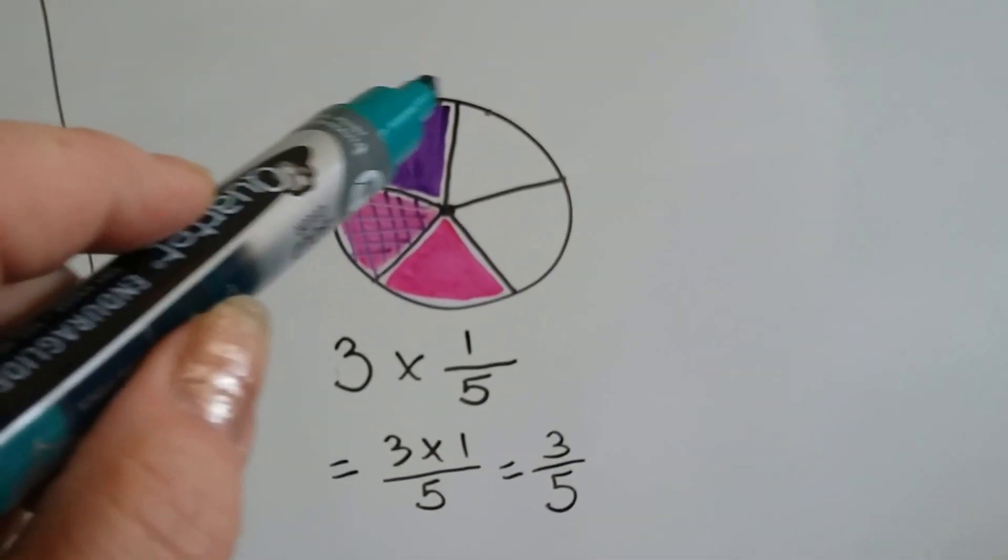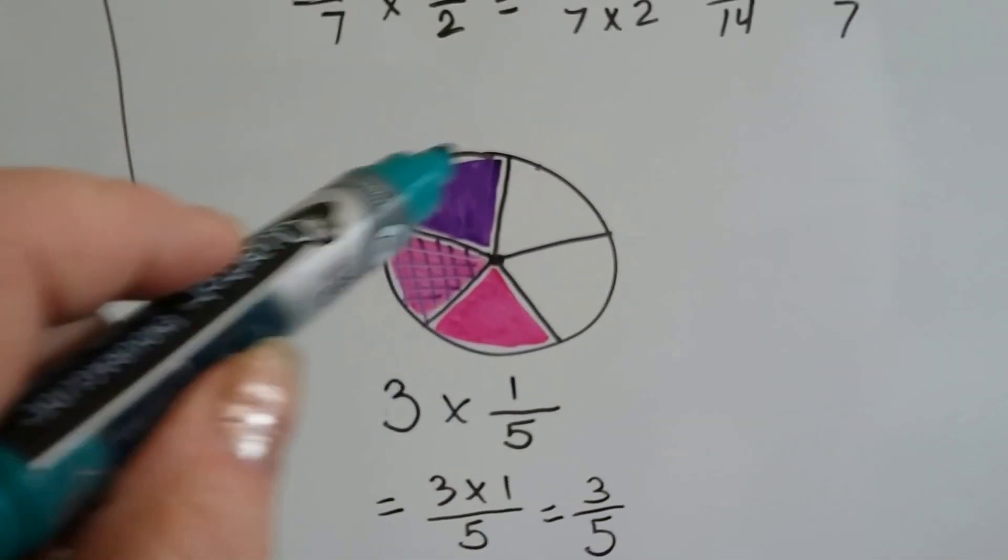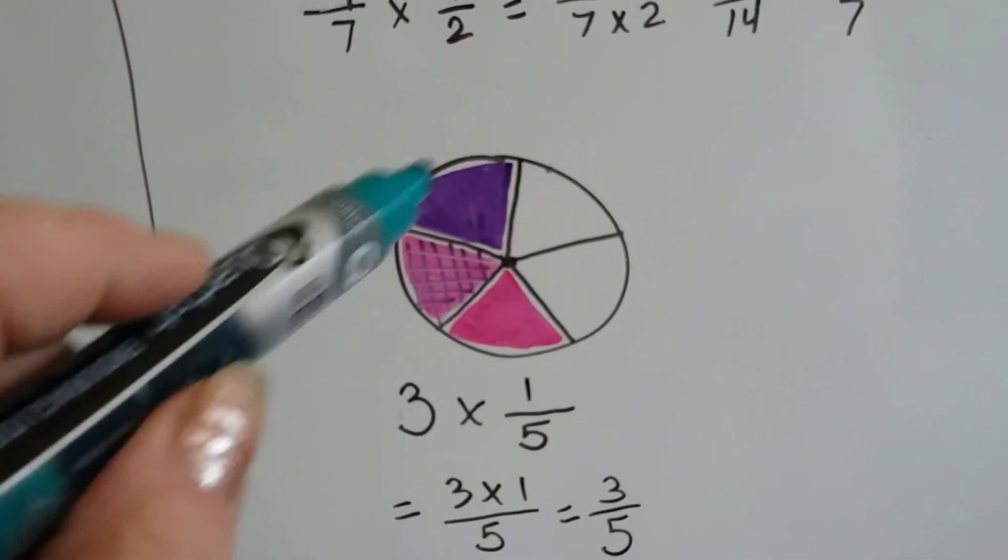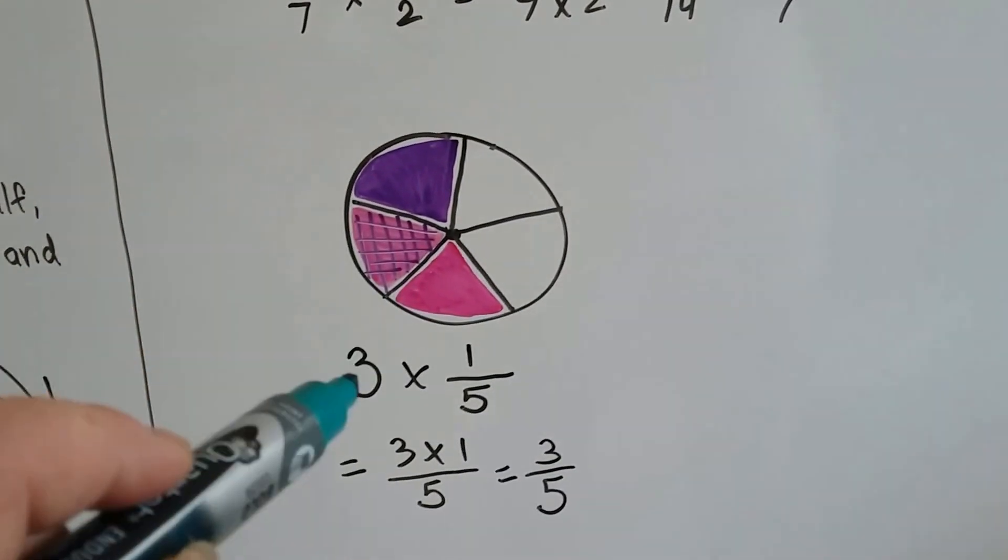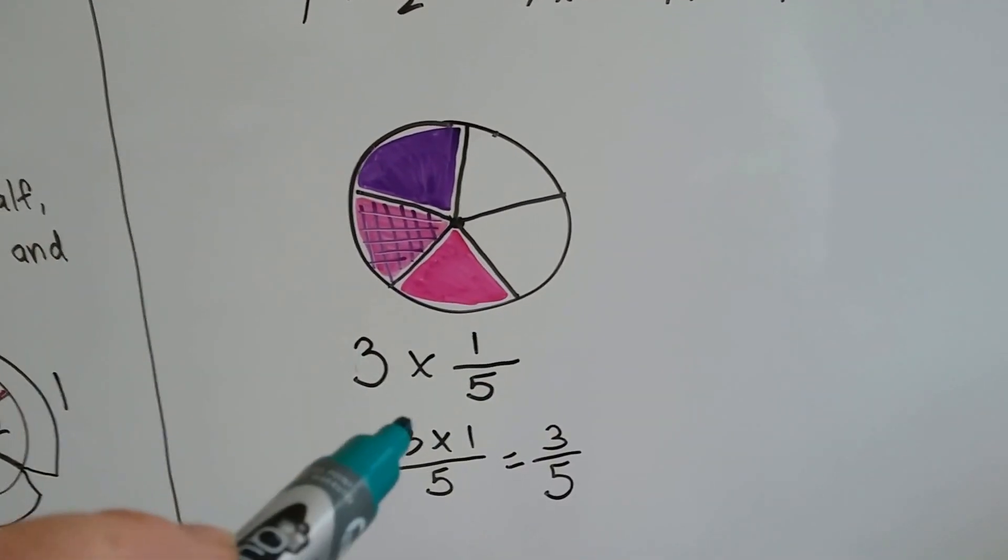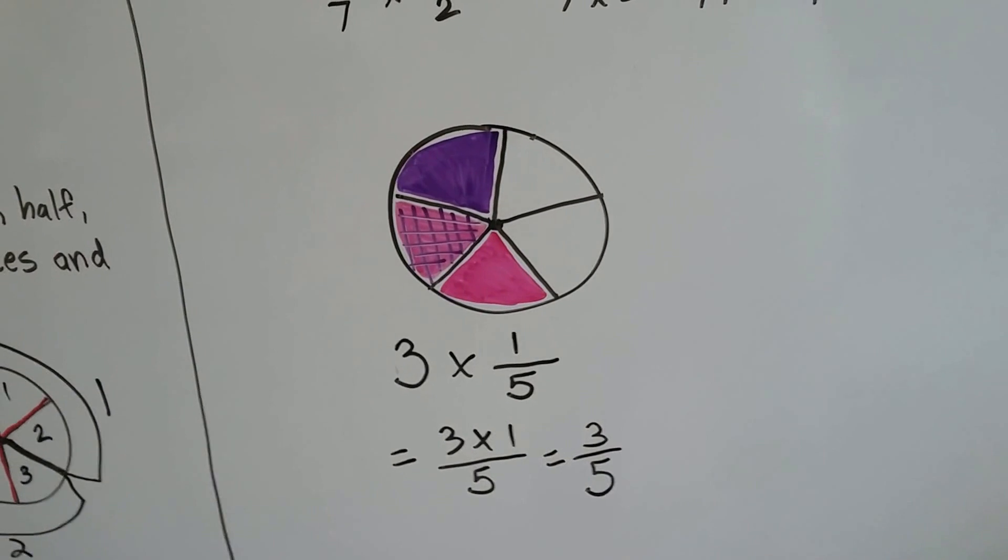If we have a circle cut into 5 parts, and we multiply each of the 1/5 times 3, that's 3 times 1/5. Or 3 times 1 over 5, it's 3/5.